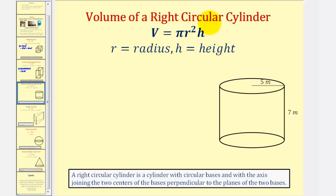Next we have a right circular cylinder, pictured here. A right circular cylinder is a cylinder with circular bases and with the axis joining the two centers of the bases perpendicular to the planes of the two bases. The volume is equal to pi R squared H, where R is the radius and H is the height.